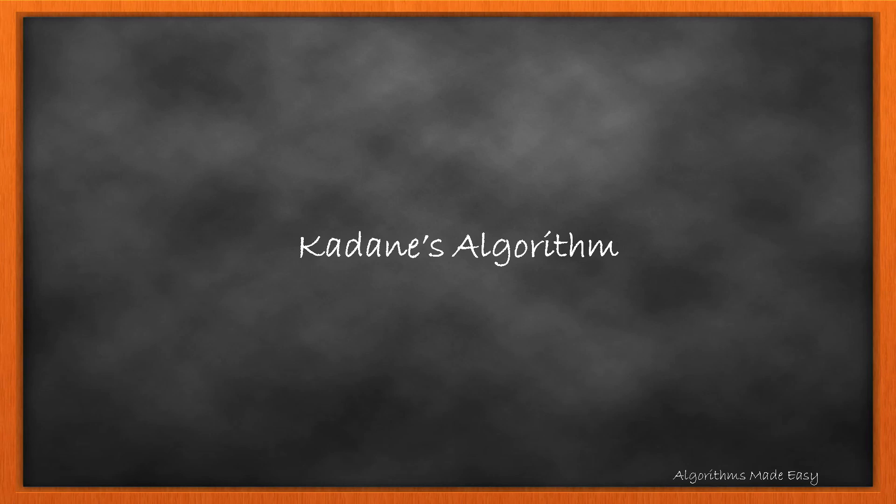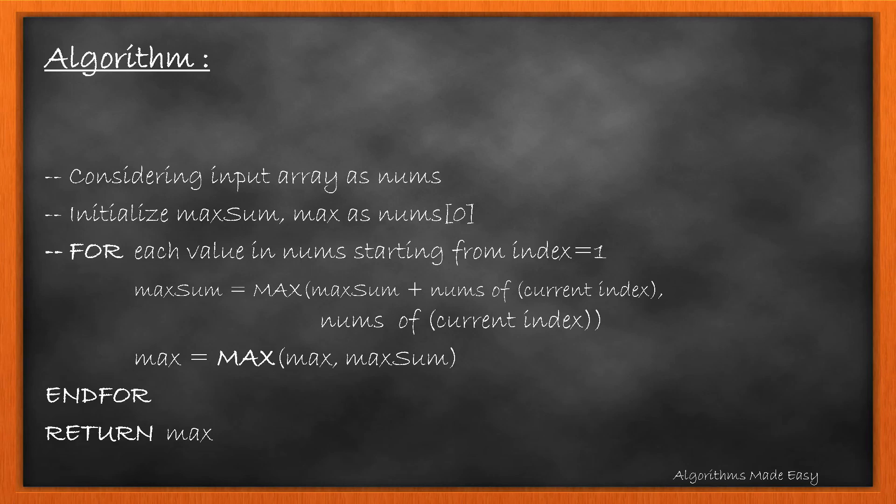Some of you might not be familiar with it. So, let's walk through the algorithm first. Let's consider input array as nums. We will initialize two integers, maxSum and max, with the first value of array. maxSum will store the maximum of current maxSum plus element and maxSum. While, max will store the maximum of current maxSum and max. We will update both with every element. At the end, we will get max.